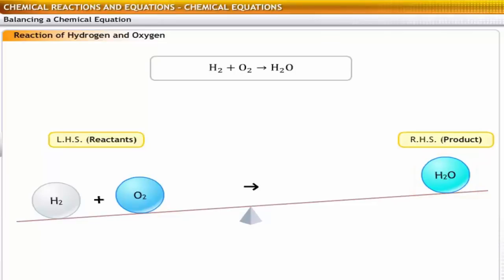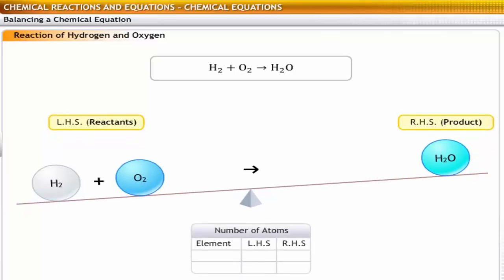In the second step, you need to count the number of atoms of each type. You'll notice that hydrogen has two atoms on the reactant side and two atoms on the product side. But oxygen has two atoms on the reactant side and only one atom on the product side. So there is one oxygen atom less on the product side. According to the law of conservation of mass, the number of atoms on the reactants and product side should be the same.